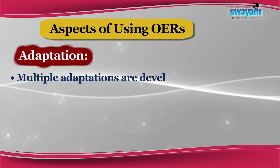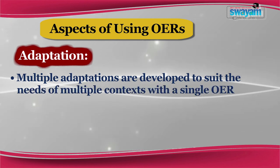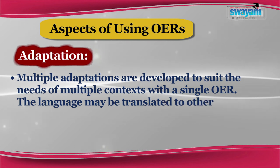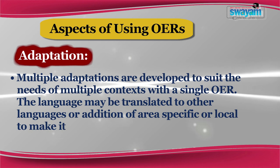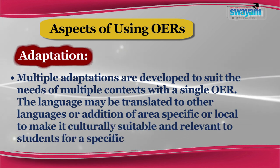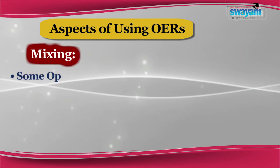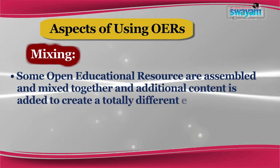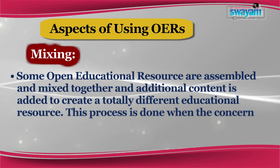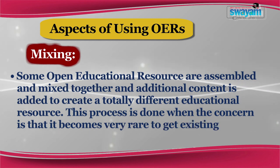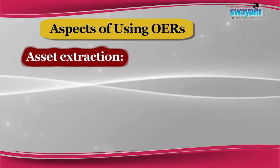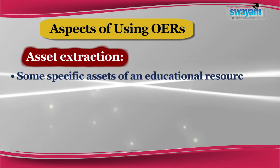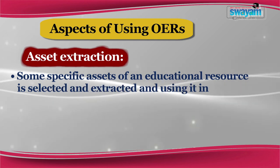Some popular methods by which open educational resources can be modified are: first, Adaptation — multiple adaptations are developed to suit the needs of multiple contexts from a single OER; the language may be translated or area-specific or local content added to make it culturally suitable and relevant for a specific context. Next is Mixing — some OERs are assembled and mixed together with additional content added to create a totally different educational resource, used when it is very rare to find existing OERs that suit the needs. Next is Asset Extraction — specific assets of an educational resource are selected and extracted for use in an entirely different context, generally used for media elements such as graphs and photographs.